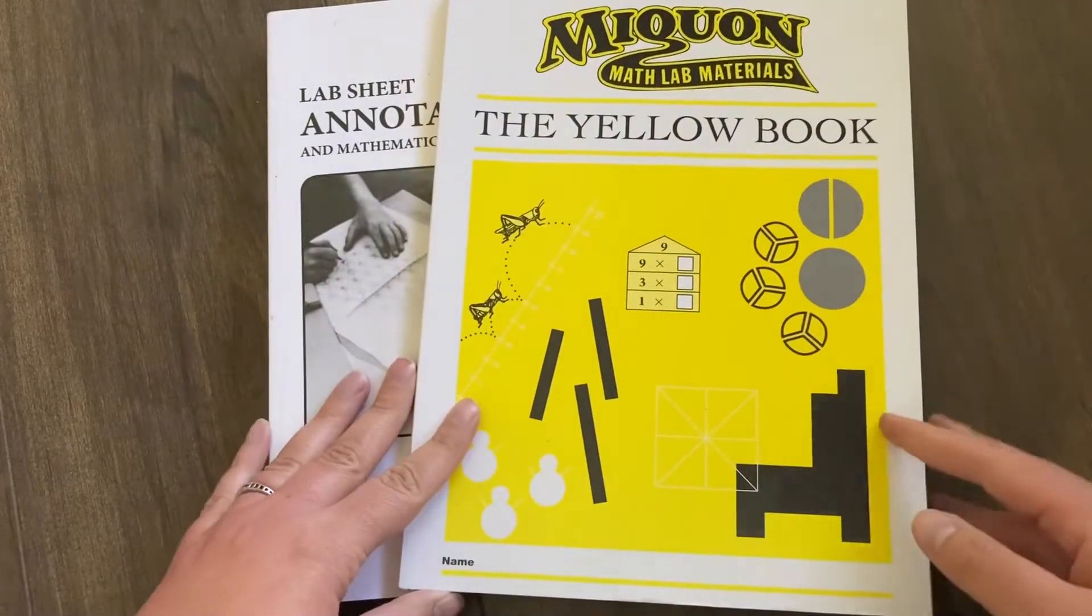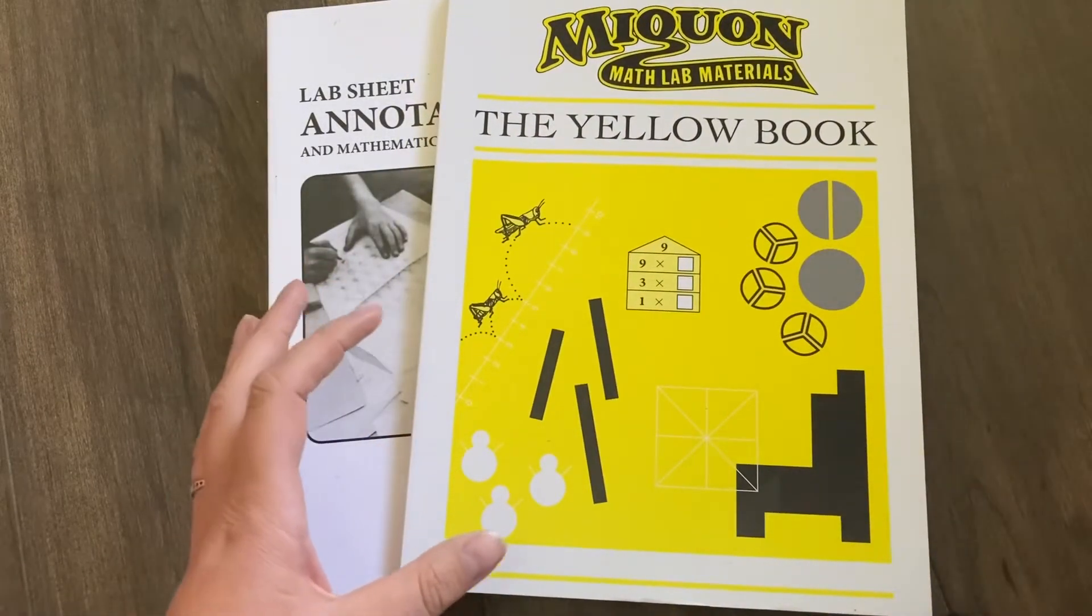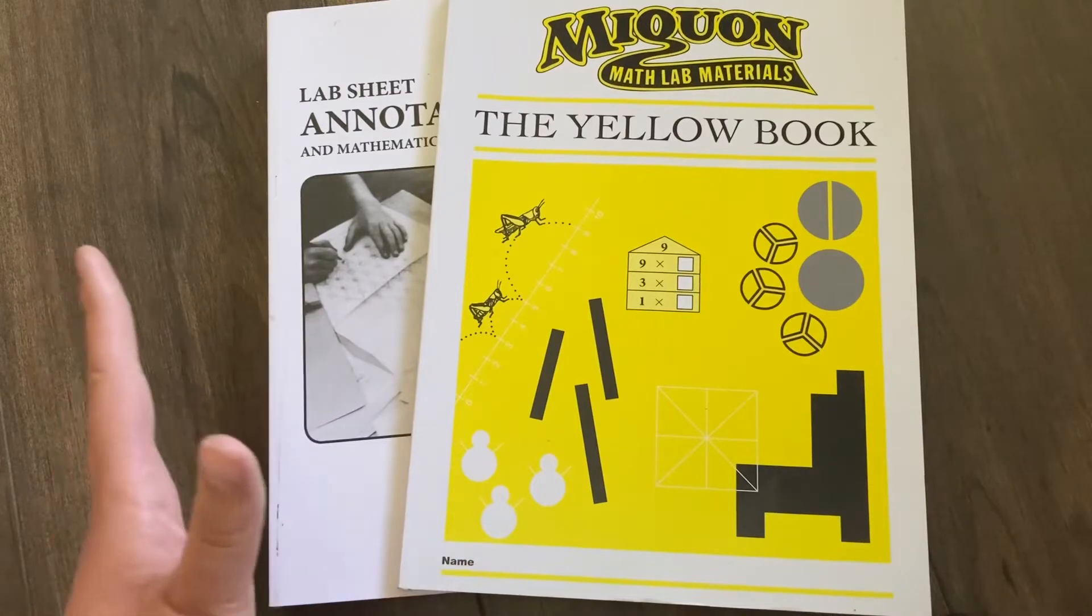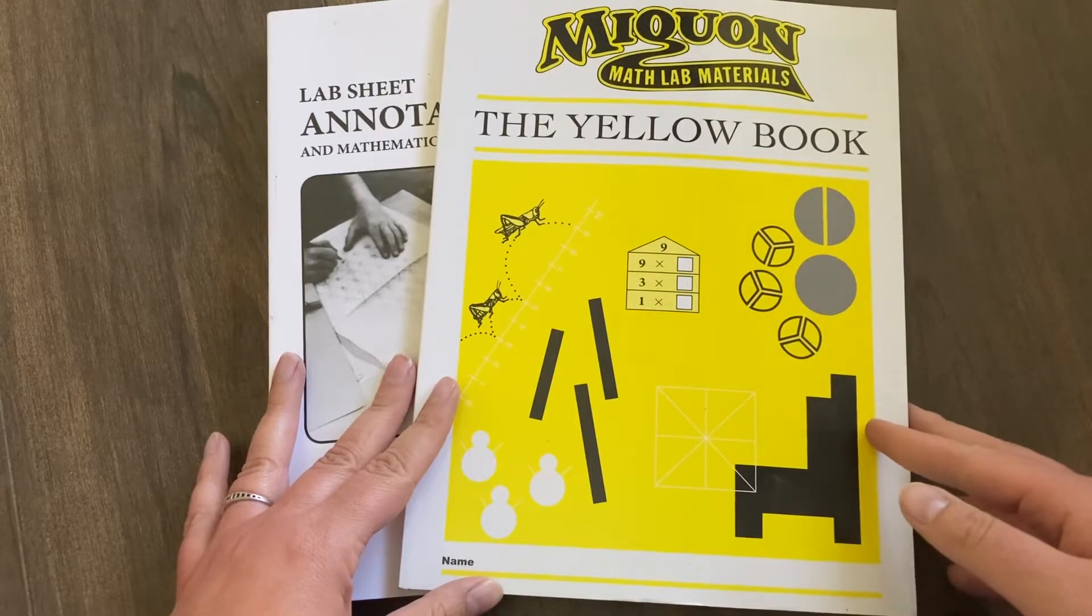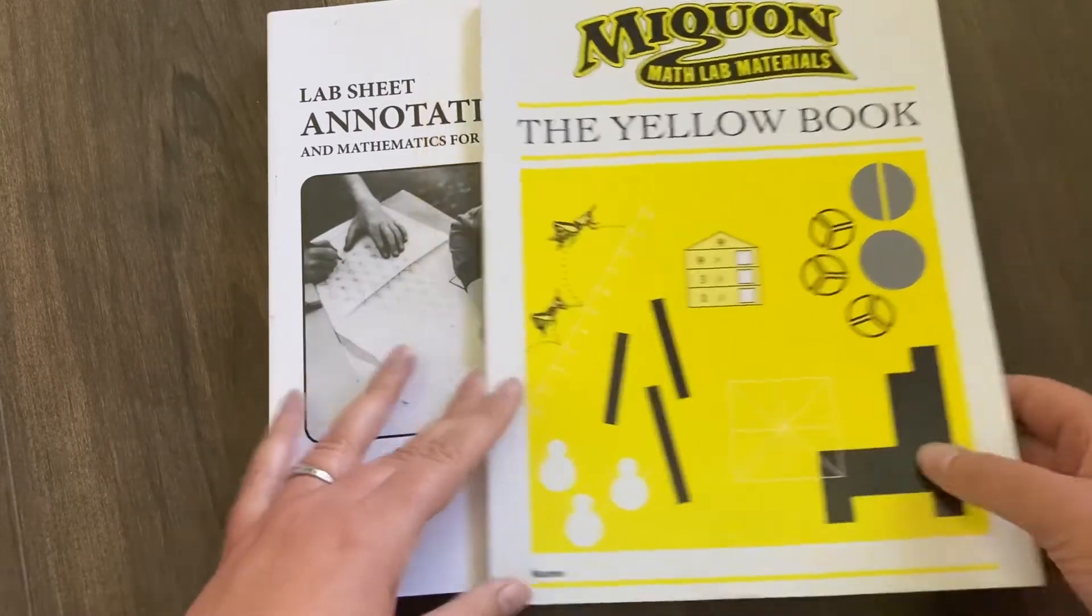This is supposed to have rods that they sell separately. I did not buy the rods, but this kind of math has manipulatives that you can purchase.